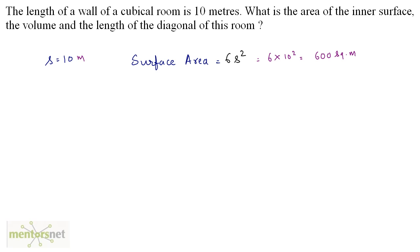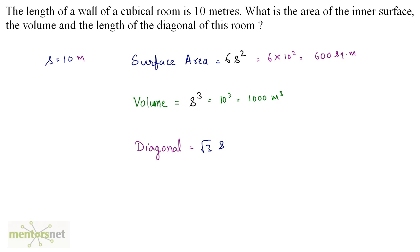Now let's calculate the volume. Volume is the cube of the side, so that is 10³ = 1000 cubic meters. For the diagonal, the length is √3 times the side, so that is approximately 1.73 × 10 = 17.3 meters, which is the diagonal of this room. This is how you solve questions related to cubes — you just need to know the formulas, put the values in, and get the answers.